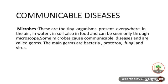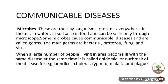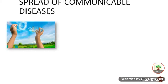Now we will study communicable diseases. These are caused by microbes — tiny organisms present everywhere in air, water, soil, and food, visible only through microscopes. Some microbes cause communicable diseases, but not all, as some are useful and some are harmful. The harmful ones are called germs, and the main germs are bacteria, protozoa, fungi, and viruses. When a large number of people in an area become ill with the same disease at the same time, it is called an epidemic. Examples include jaundice and cholera.